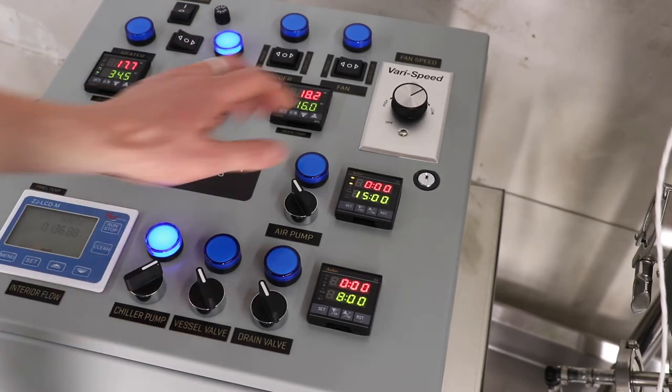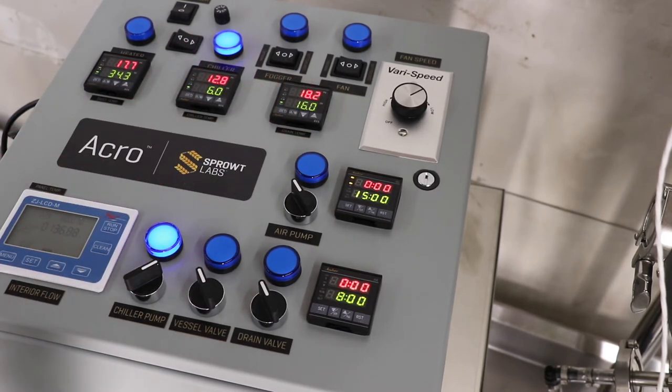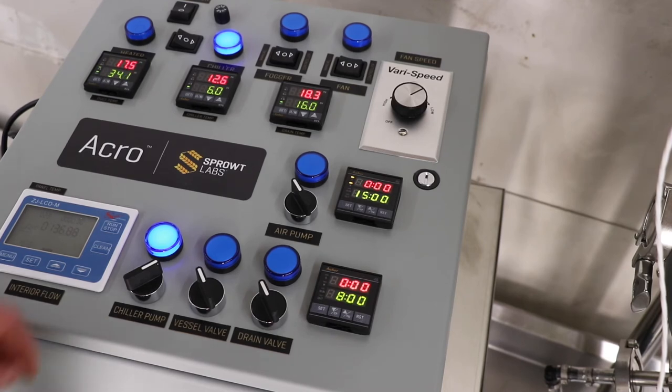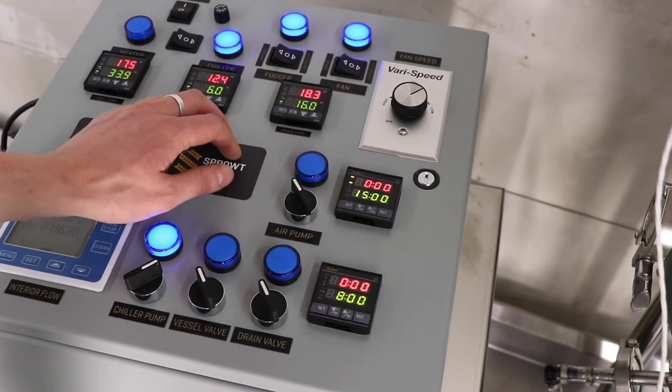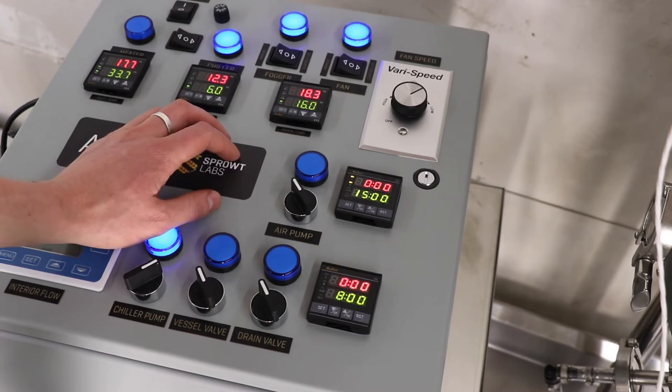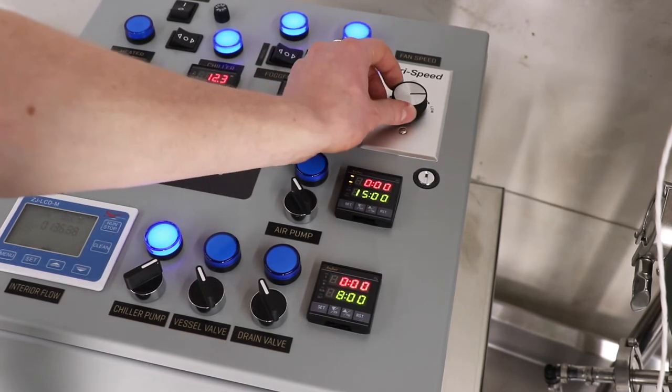The chiller and the chiller pump set on, of course the chiller only kicking in when the glycol gets too warm, and the fan and fogger set to controller so that when the grain bed rises above its set temperature the fan will blow cool humid air through the grain bed.